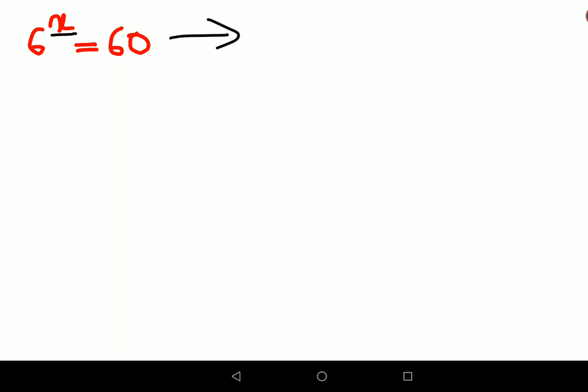So here whenever you have something over here which is 6 raised to x and this is 60, please try to write 60 in terms of 6 if we can. If you can, then you write this as 6 into 10.